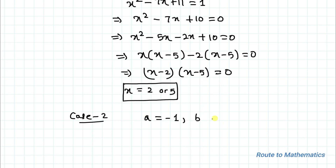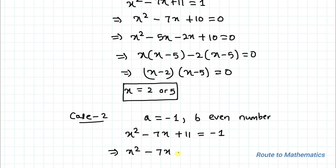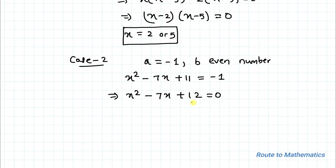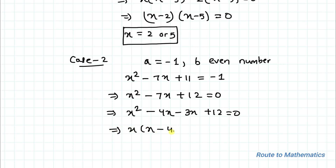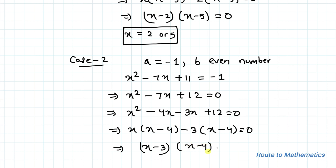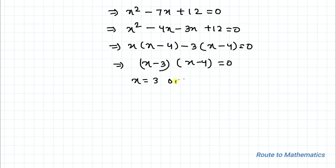Case 2: a = -1 where b is any even number. Setting x² - 7x + 11 = -1 gives x² - 7x + 12 = 0. Using middle term splitting: x² - 4x - 3x + 12 = 0, so x(x - 4) - 3(x - 4) = 0, giving (x - 3)(x - 4) = 0. Therefore x = 3 or x = 4.